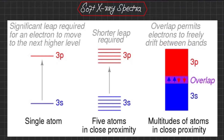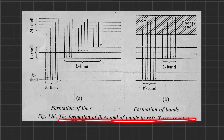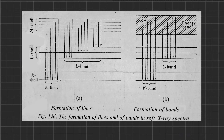Soft X-ray spectra provide the experimental evidence for the existence of band theory. The existence of energy bands postulated in the preceding section is borne out by a study of soft X-ray spectra. When a cooled metal is bombarded by a beam of high-speed electrons, some electrons in lower energy levels of the metallic atom may be energized sufficiently to be ejected. Electrons taking the vacant place from higher levels cause an emission of radiation in the X-ray region dependent on the energy changes involved.